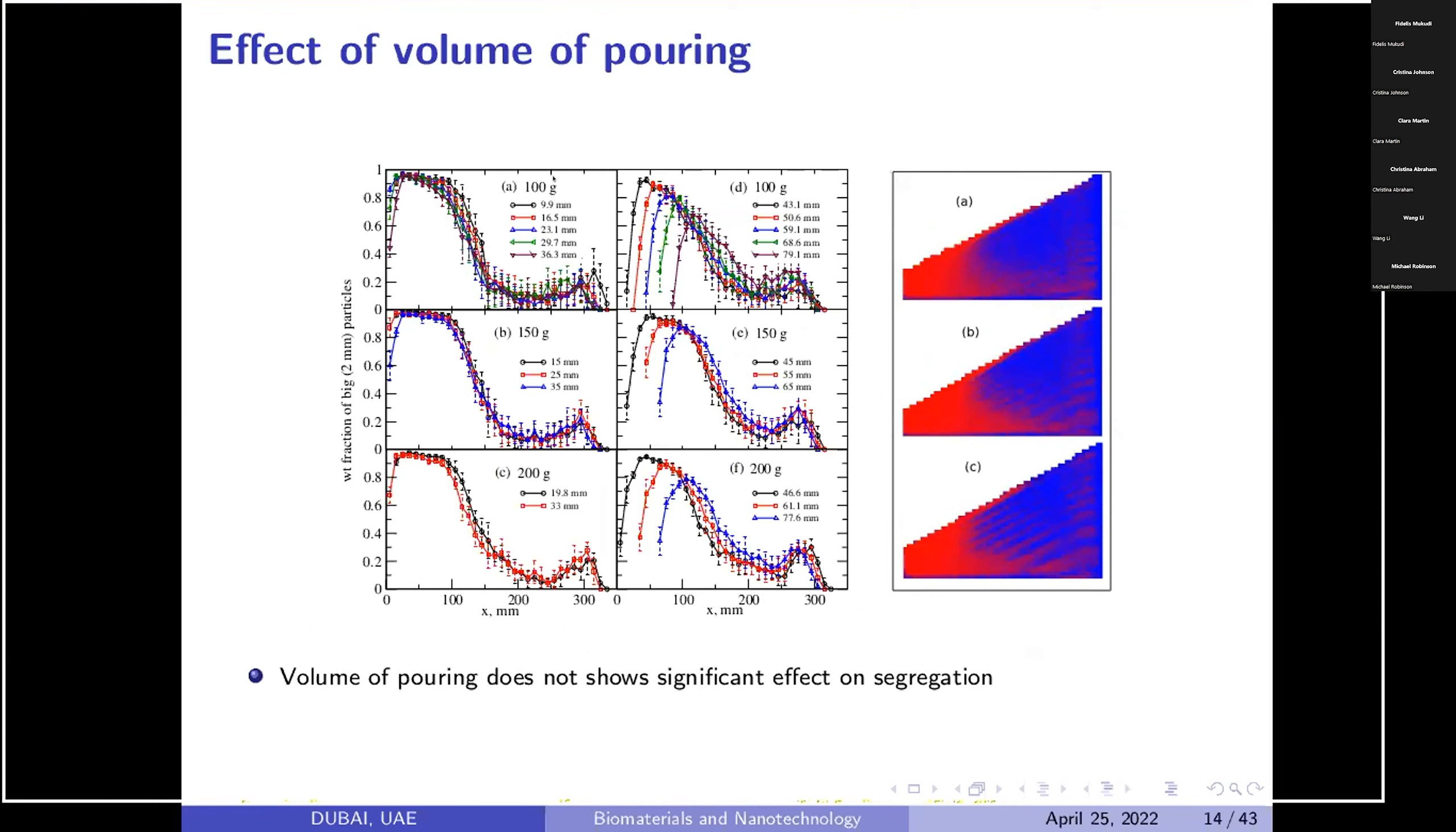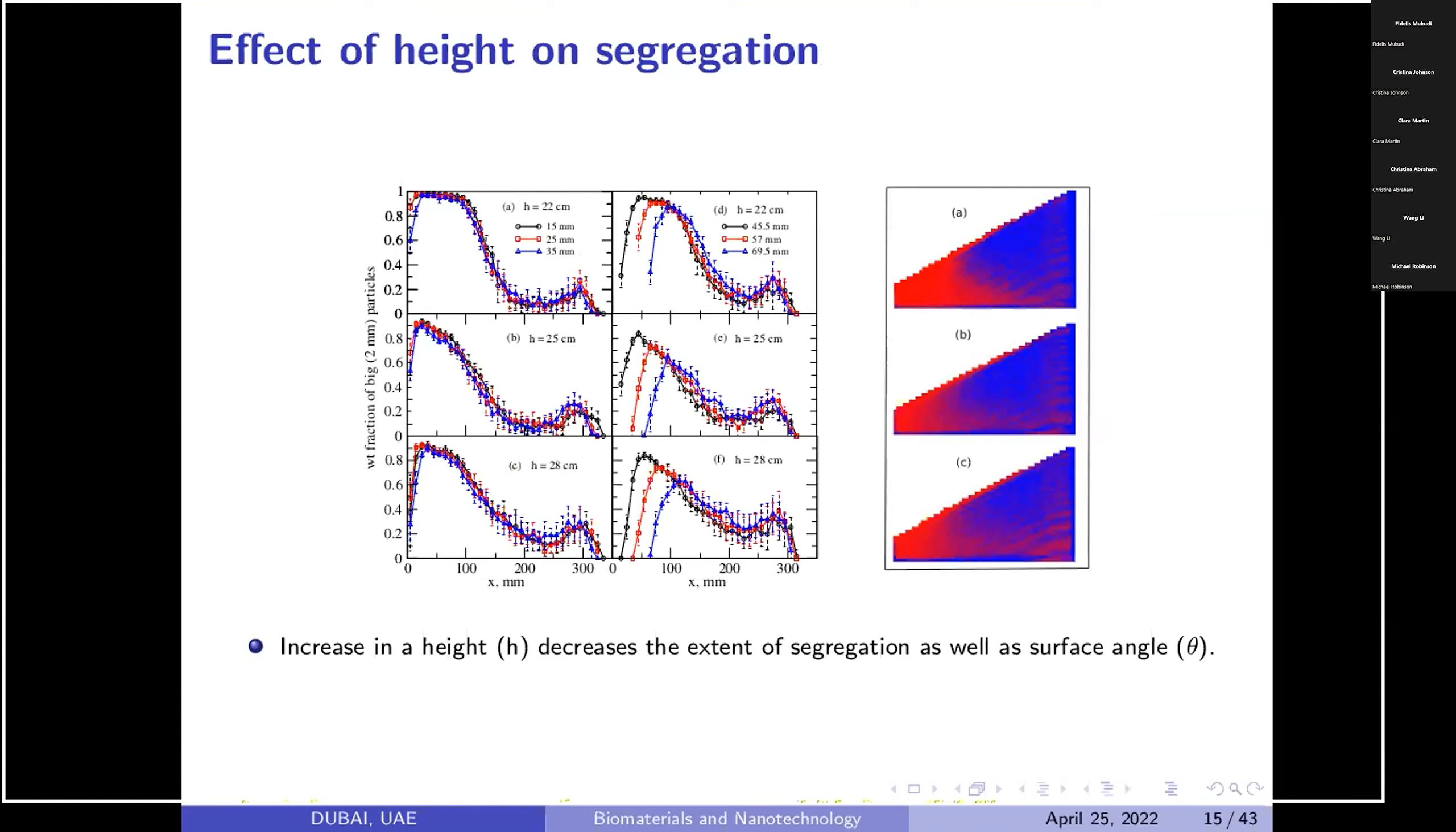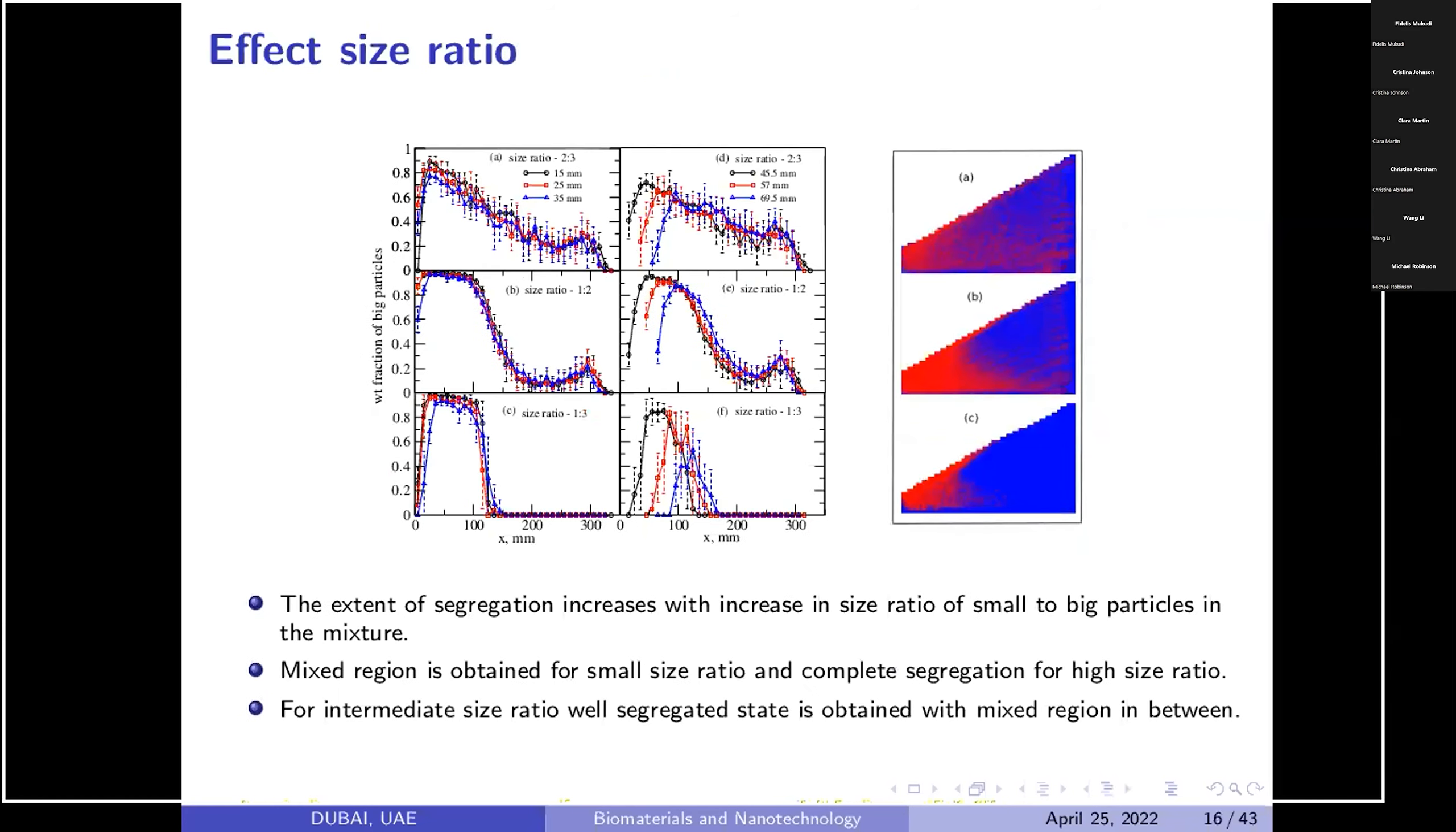We obtained effect of composition, then volume of pouring. Then we checked with height of segregation. We have observed that effect of height is there up to certain extent, later on there is no effect. We have done also our experiment on size ratio. We can clearly see that where the size ratio is 1 to 3, the segregation is higher, when the size ratio is less, which is typically 2.2 to 3, that is 1.5, then the region is mixed. You can see this weight fraction of particle versus the position x which is plotted in this.